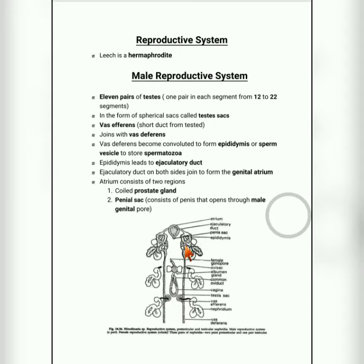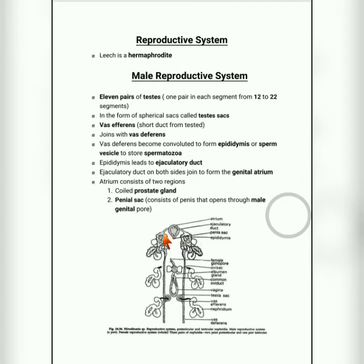The vas deferens becomes a coiled structure called the epididymis or sperm vesicle. In the epididymis, spermatozoa — that is, the motile or moving sperm cells — are stored.